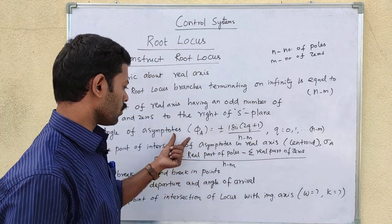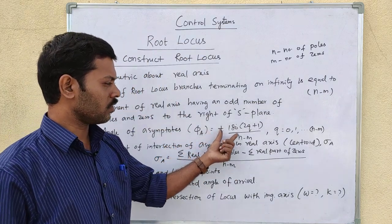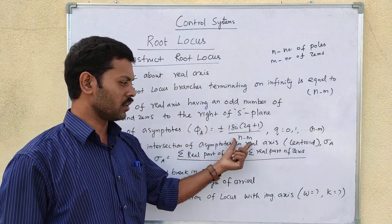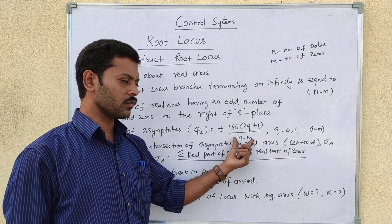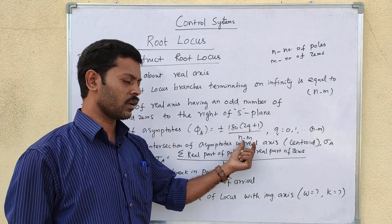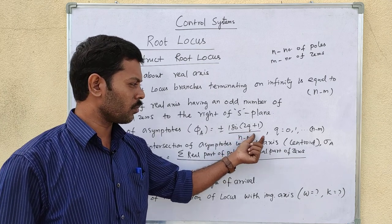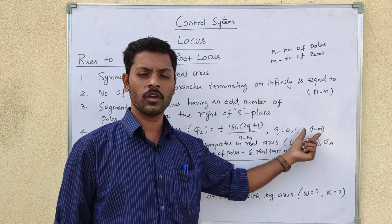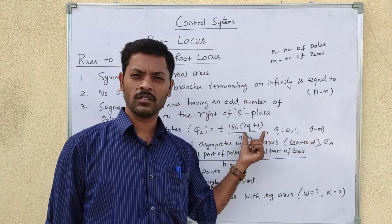The angle of asymptote formula is: plus or minus 180 degrees times (2q + 1) divided by (n minus m). Here n minus m is the number of poles minus the number of zeros, and q equals 0, 1, up to n minus m minus 1.